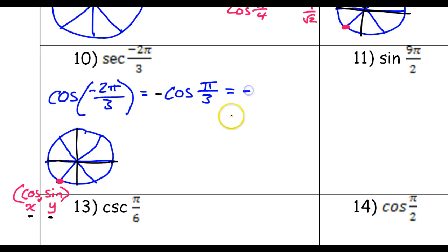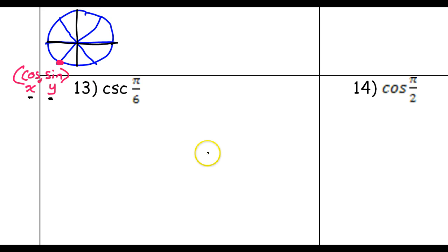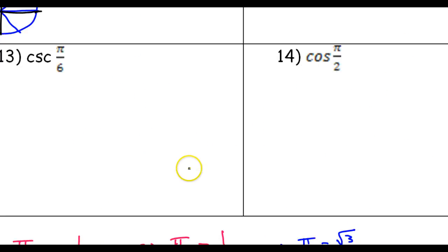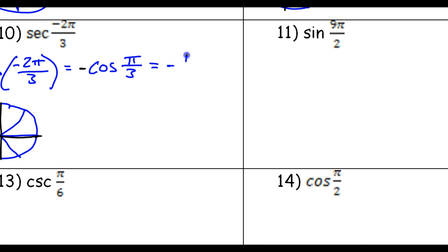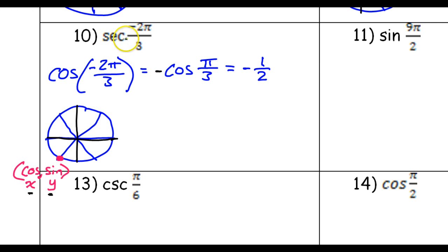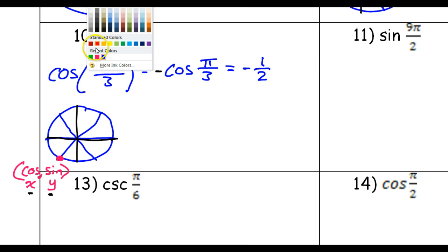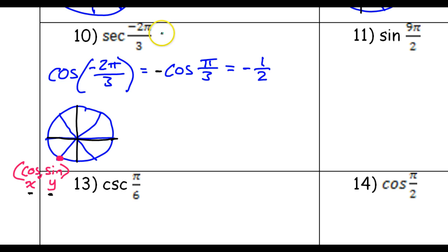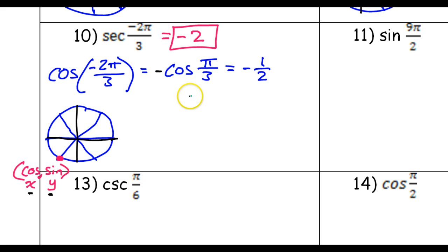So we'll have negative something. The cosine of pi over three is one of the ones we just wrote down — that's one half. But that's not the final answer because we're supposed to be doing secant. So if we want the secant, it's going to be the reciprocal of this — negative two over one, which is just negative two. So that will be the final answer.